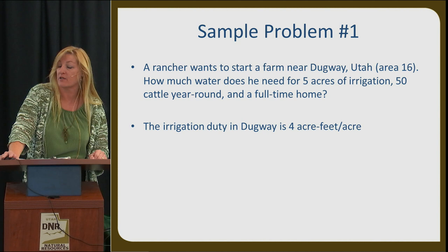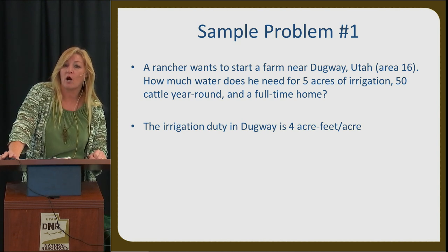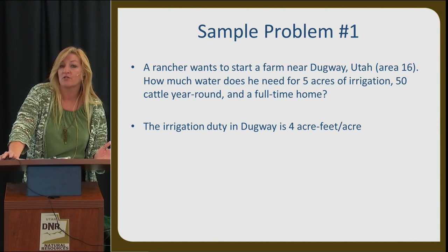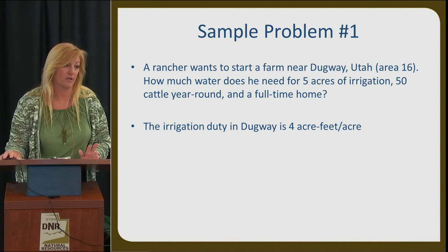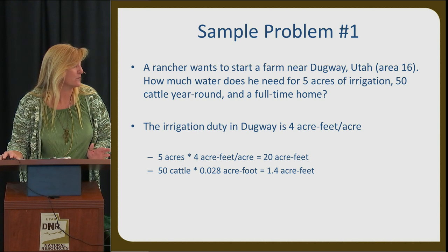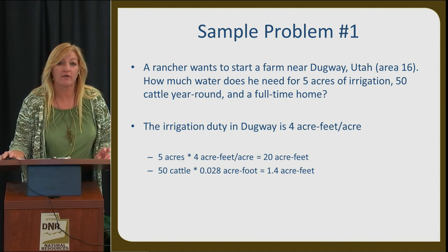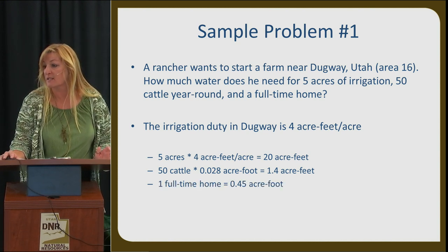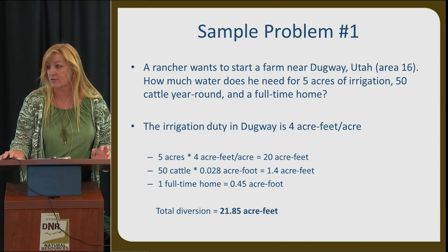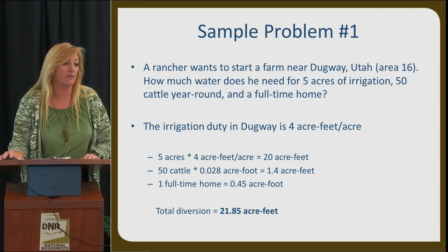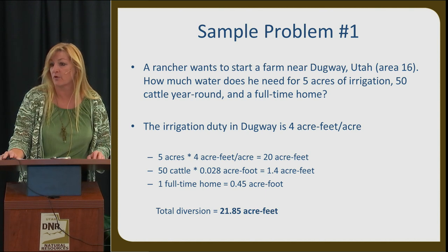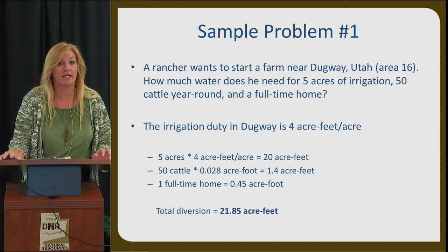Sample problem: a rancher wants to start a farm near Dugway, Utah, which is Area 16. How much water does he need for five acres of irrigation, 50 cattle year-round, and a full-time home? The irrigation duty in Dugway is four acre-feet per acre. Take five acres times four to get the acre-foot amount for irrigation. Then 50 cattle times 0.028 for year-round stock watering use. Add full-time domestic at 0.45. The total for this application is 21.85 acre-feet. A duty map is available on our website showing different irrigation duties for different areas.